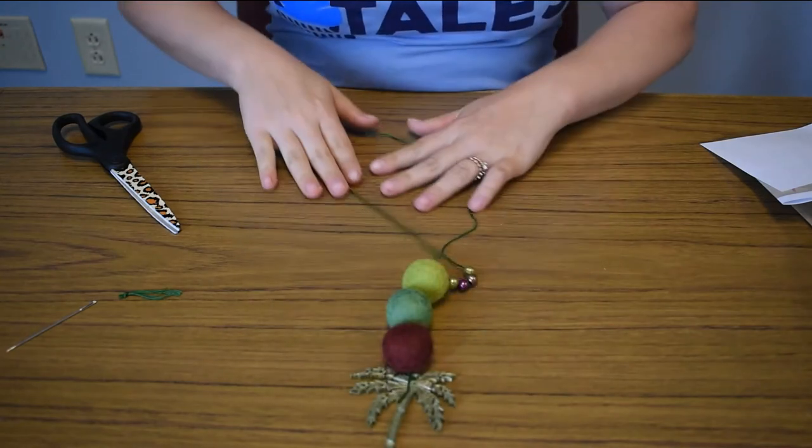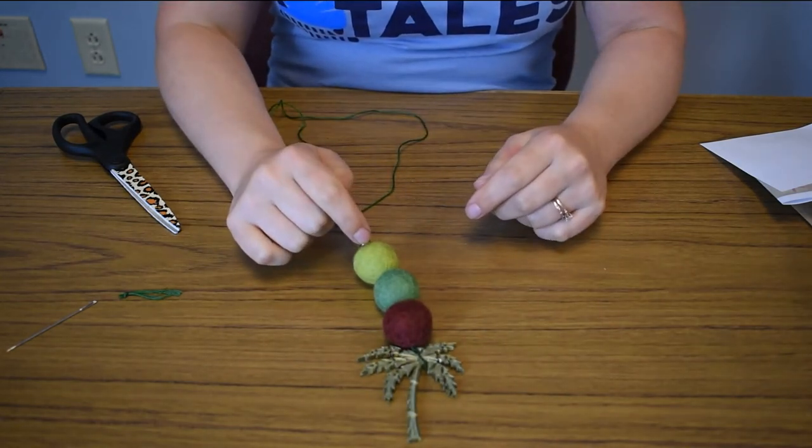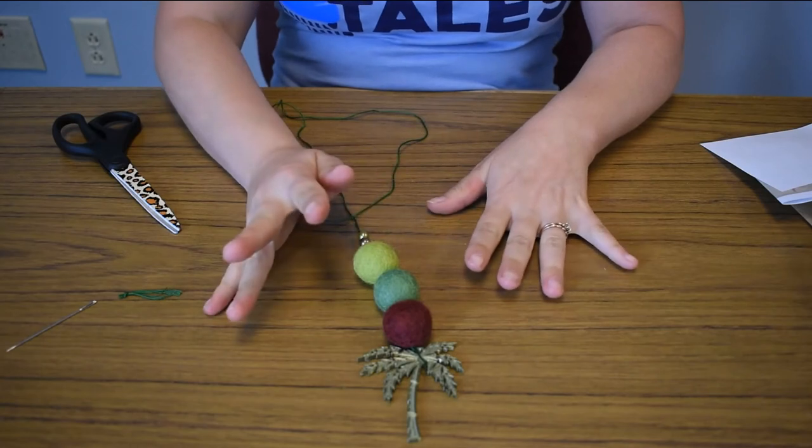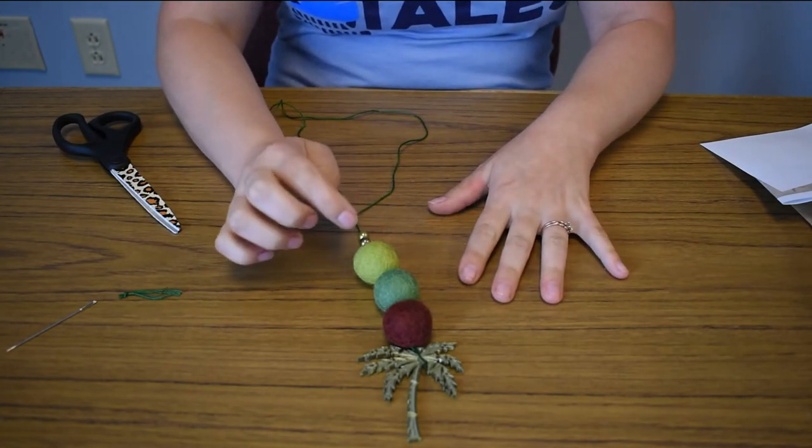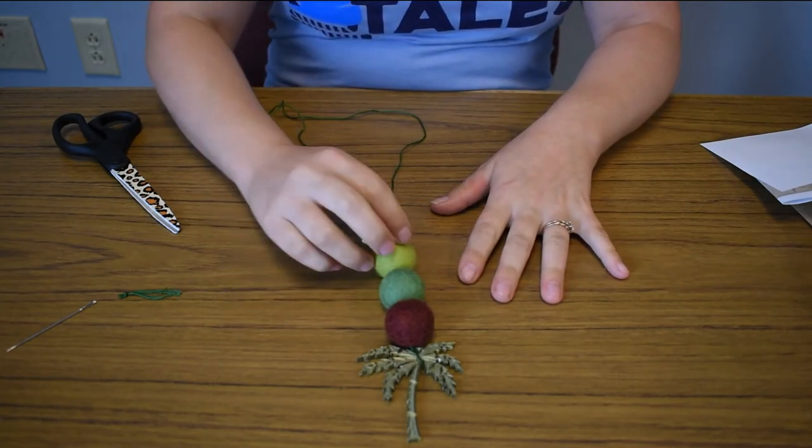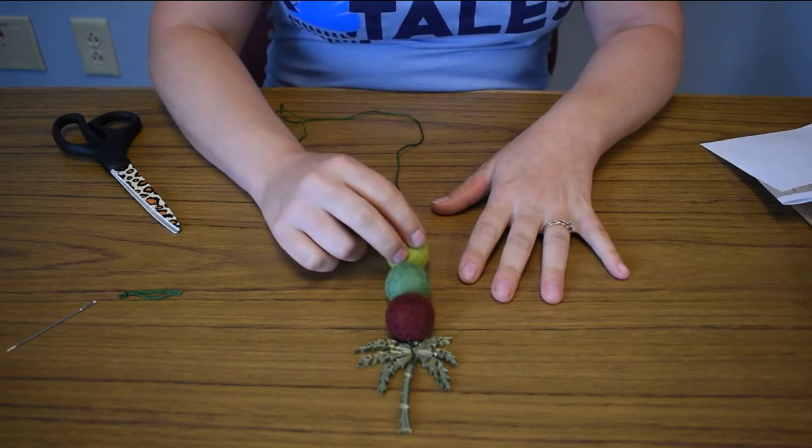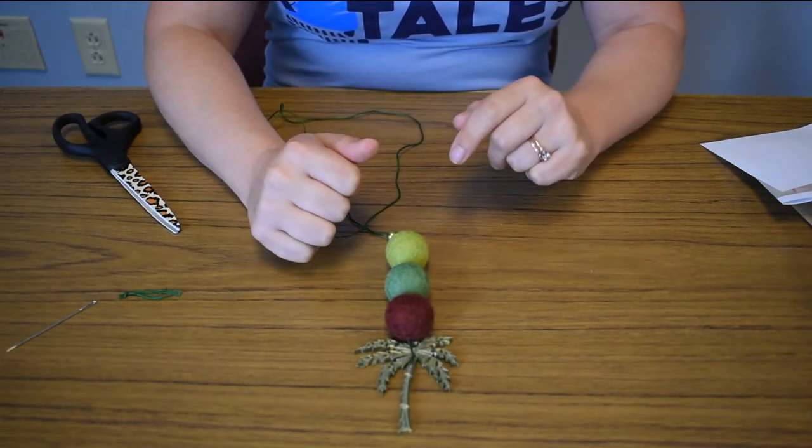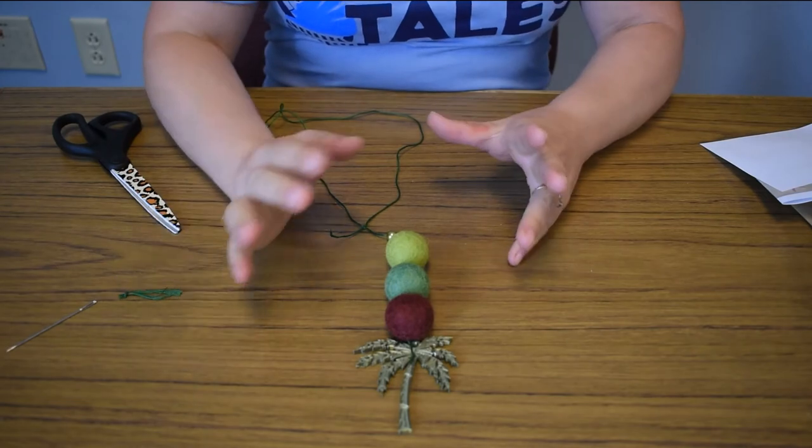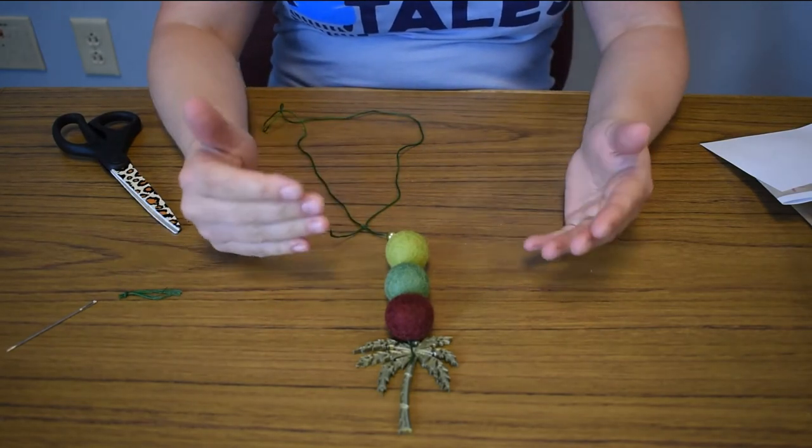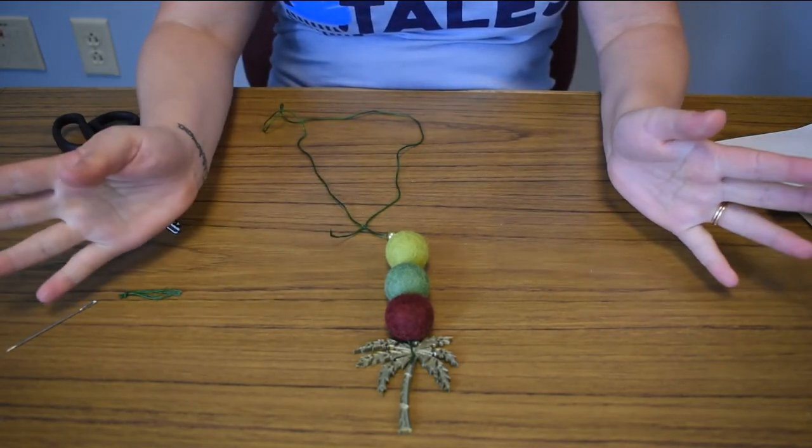For the essential oils, you would take just like one or two dabs of an essential oil and put it on either all of these wool balls or just one. It will last quite a while. And since it's kind of near your vents, it will blow on this and make your car smell nice.